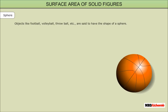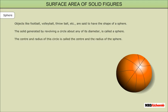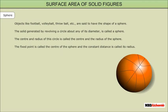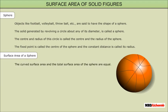Sphere: Objects like football, volleyball, throwball, etc. are said to have the shape of a sphere. The solid generated by revolving a circle about any of its diameters is called a sphere. The center and radius of this circle are called the center and radius of the sphere. The fixed point is the center and the constant distance is the radius. The curved surface area and total surface area of a sphere are equal: CSA = TSA = 4πr².